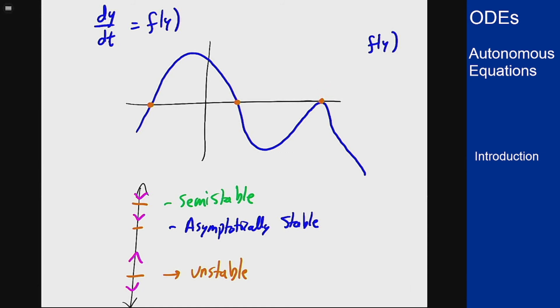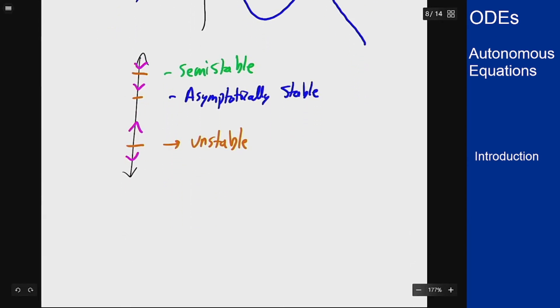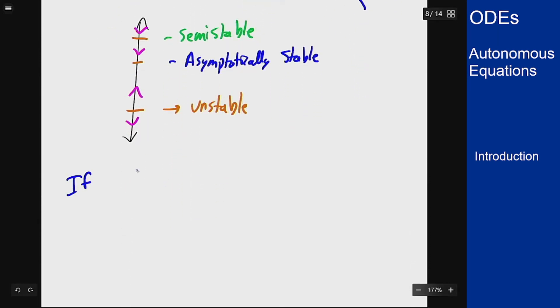But we can actually represent this condition here, going down to up, in terms of the slope or the derivative at that point. So another characterization for these solutions is that if f'(y₀) is positive, that's the positive slope going negative to positive, that's going to be unstable. If f'(y₀) is negative, then it's asymptotically stable.